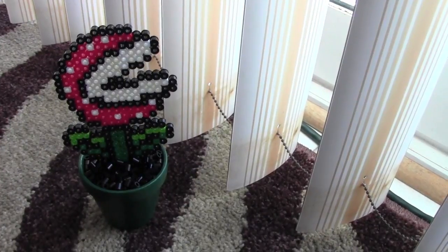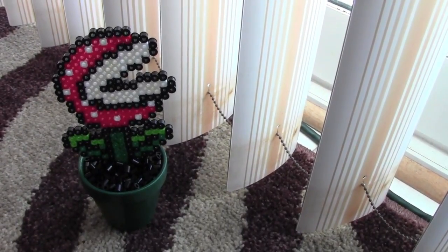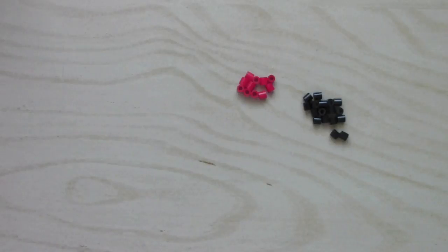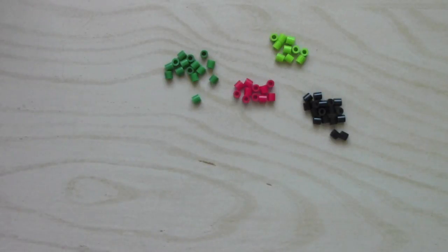Hey guys, you're watching Qtographs and today I'll be showing you how to make a mini piranha plant. For this project you will need some black perler beads, red perler beads, dark green perler beads, lime green perler beads, and white perler beads.